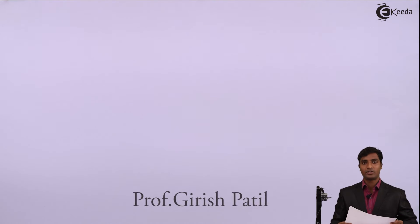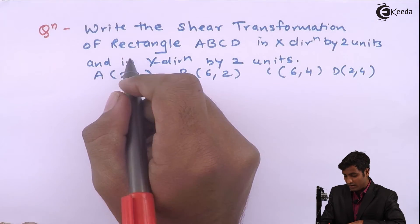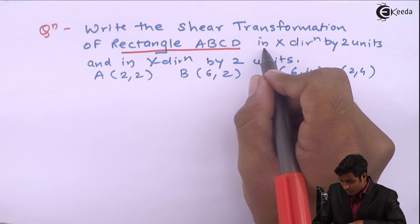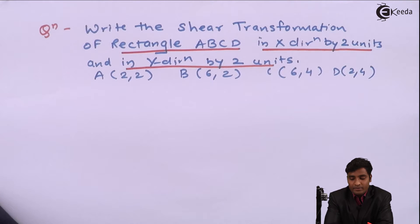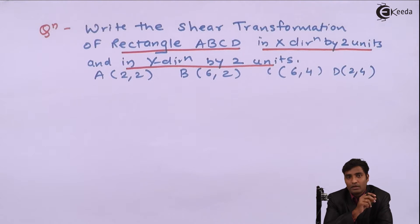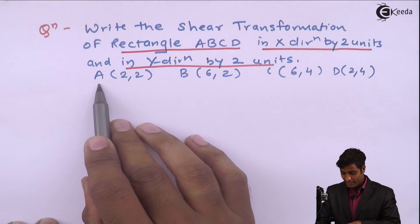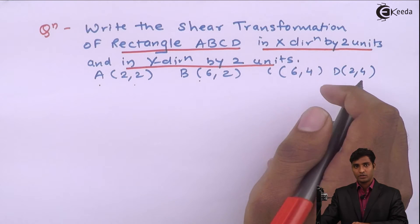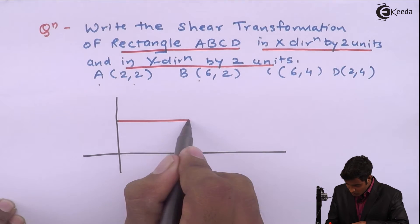We will solve the problem: write the shear transformation of rectangle ABCD. We have to write the transformation matrix for shear for rectangle ABCD in the x direction by 2 units and in the y direction by 2 units. The rectangle is given and the shearing parameter is given. The initial coordinates of the rectangle are A(2,2), B(6,2), C(6,4), D(2,4). I will roughly draw the figure.